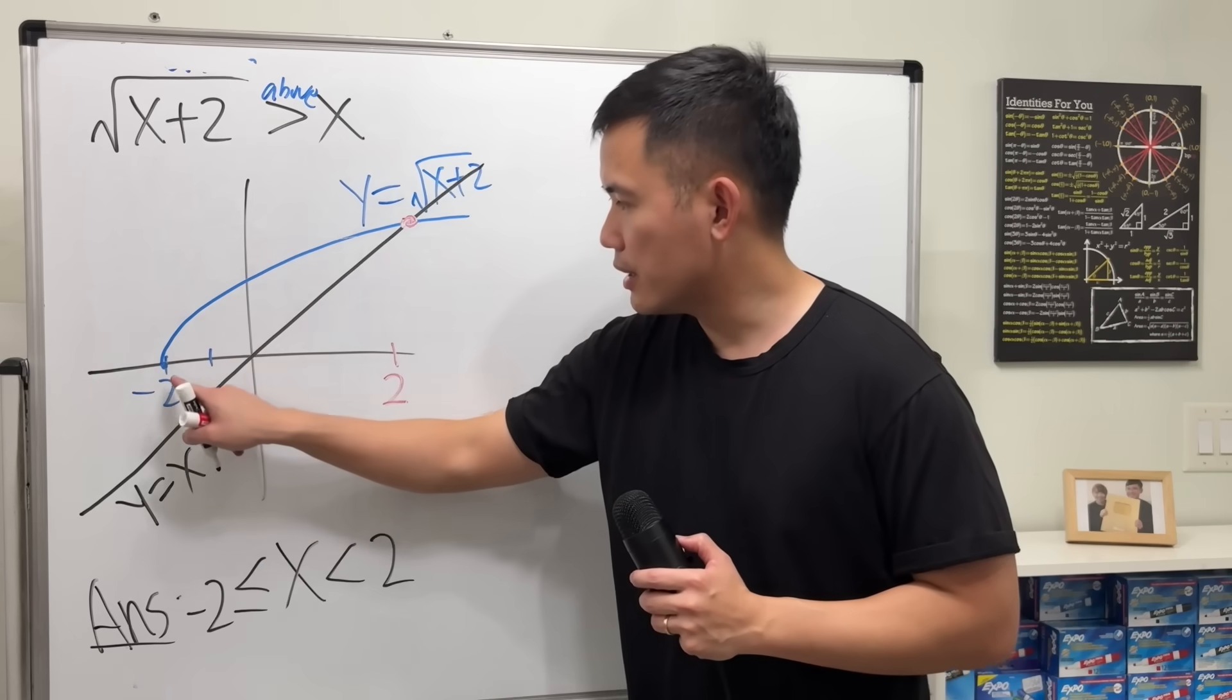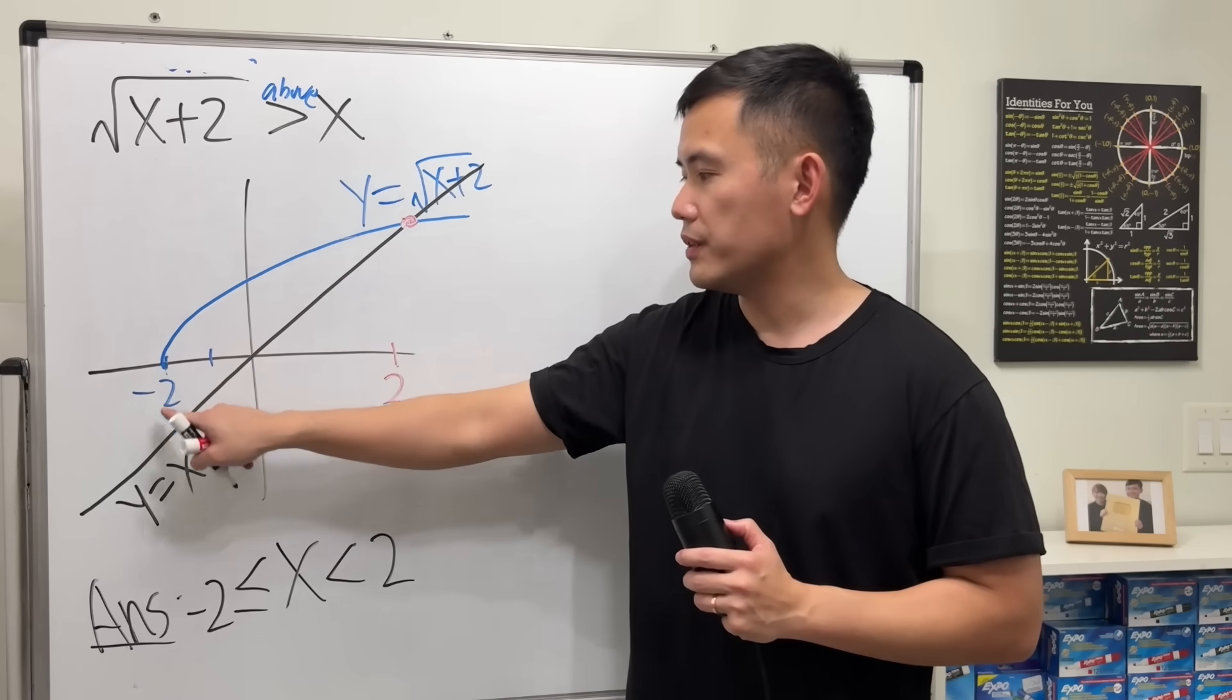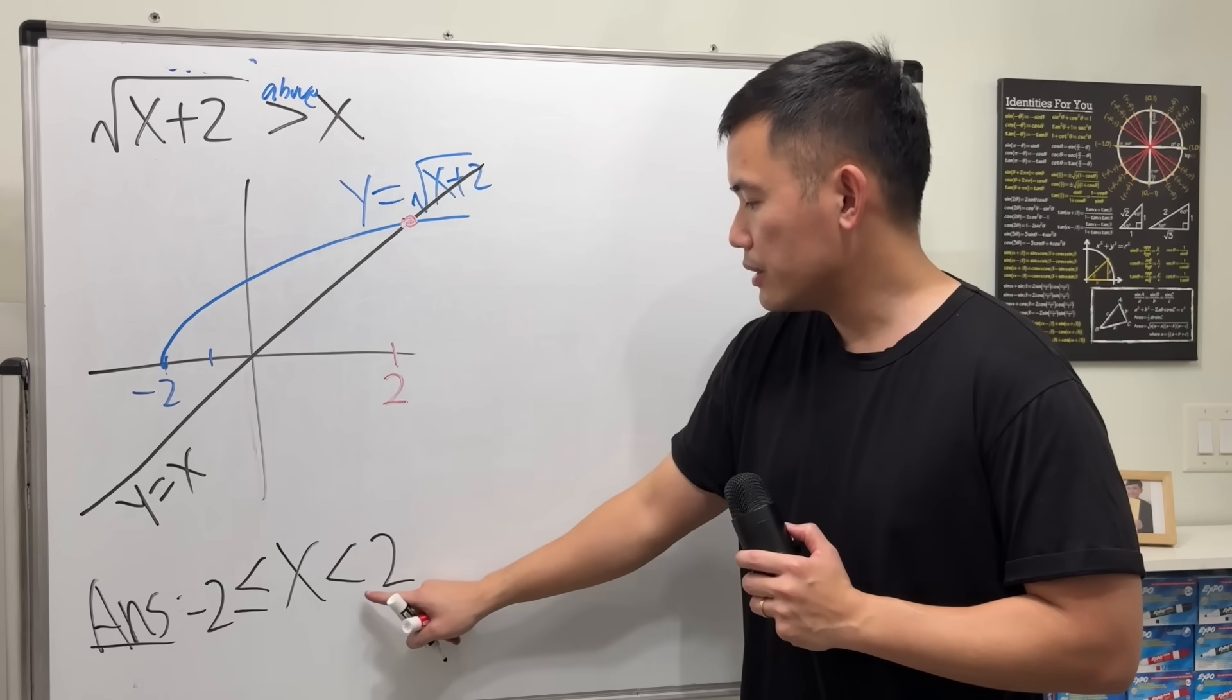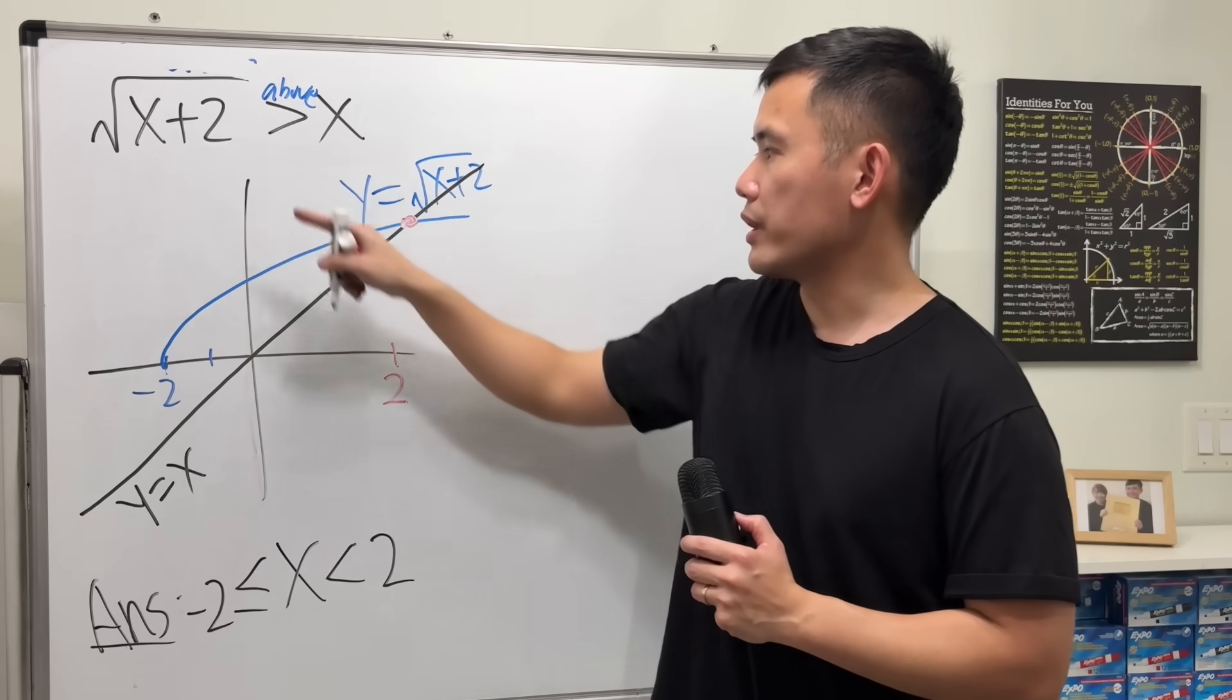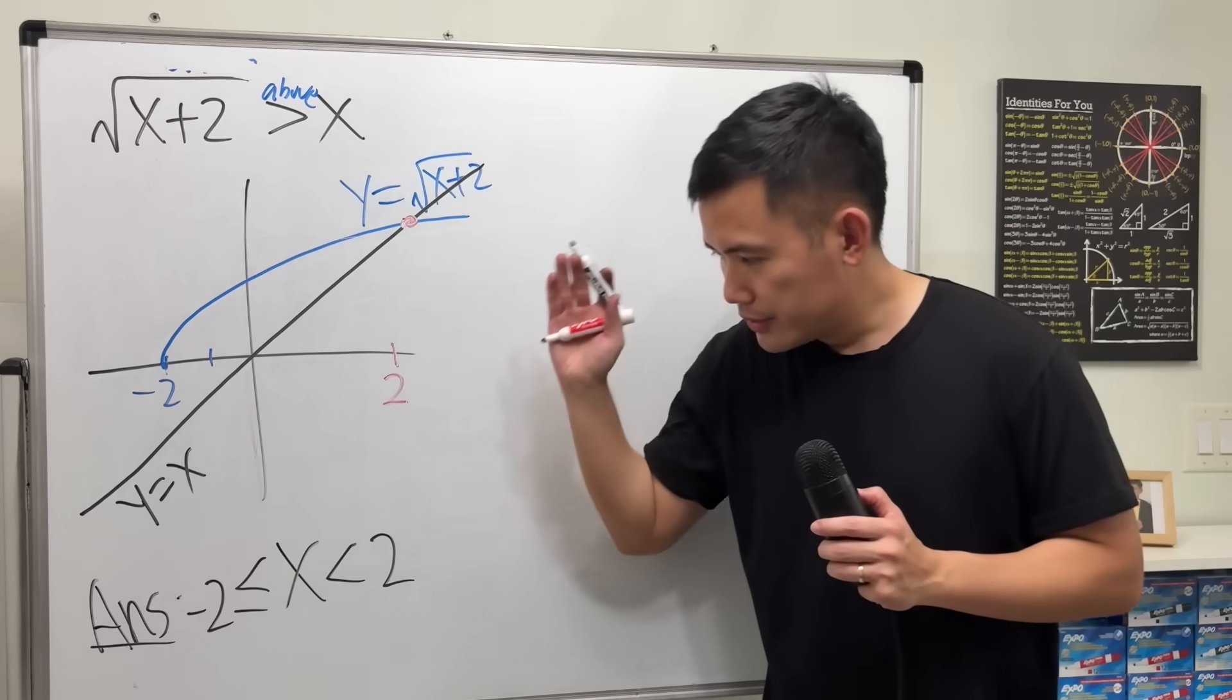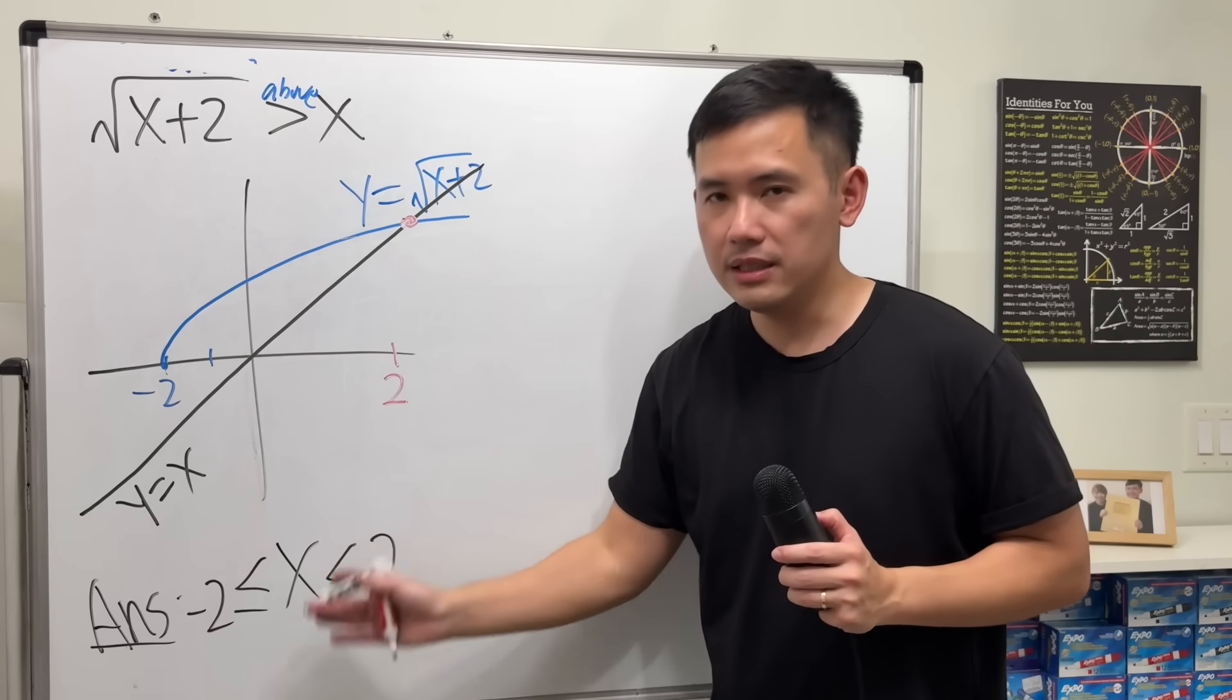Including negative 2, because this right here does achieve negative 2. Not including the positive 2, because originally one needs to be just greater than, so there's no equal sign. So this is the answer.